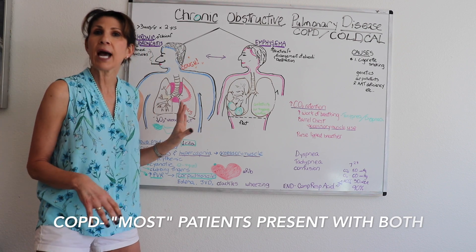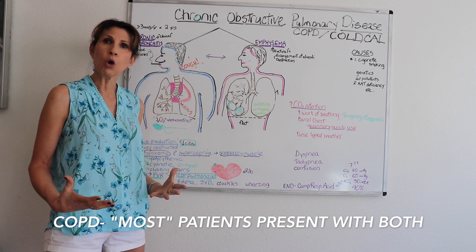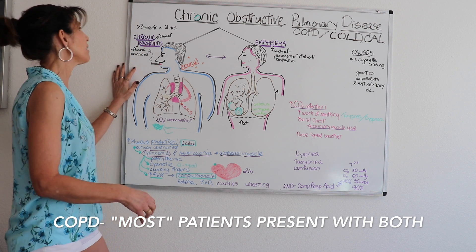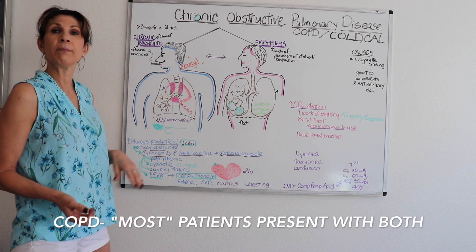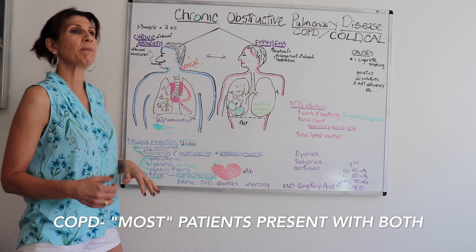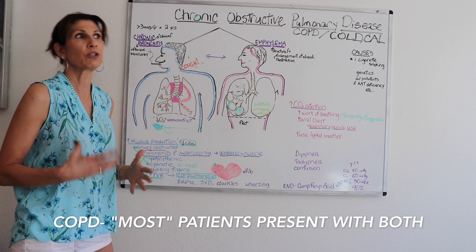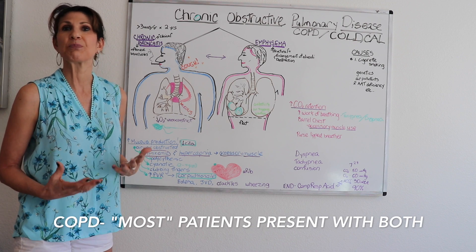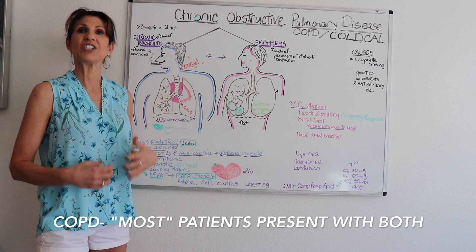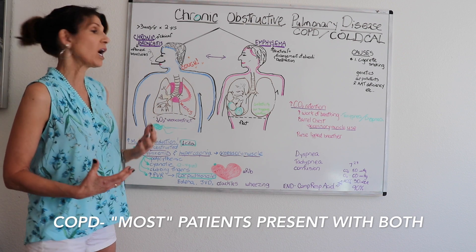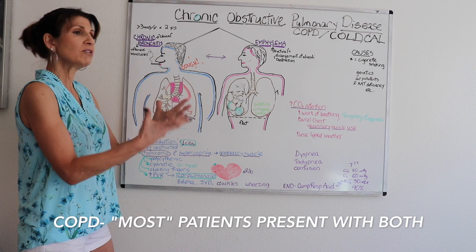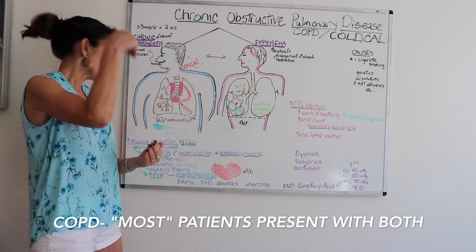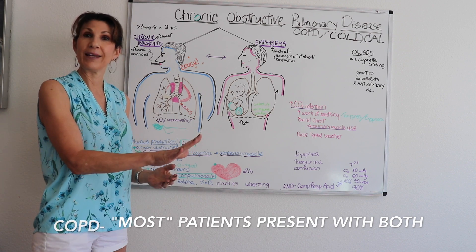The chronic bronchitis patient is also called the blue bloater. Chronic bronchitis is by definition inflammation of the bronchioles, and what characterizes airway inflammation is excess mucus production and cough. Because there is mucus in the larger and smaller airways, they have trouble getting air in.